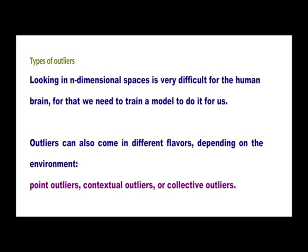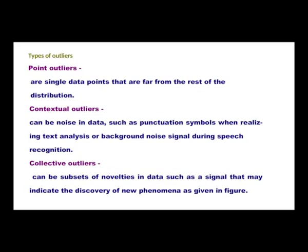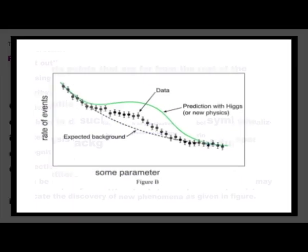Outliers can also come in different flavors depending on the environment. The classifications being point outliers, contextual outliers, or collective outliers. Point outliers are single data points that are far from the rest of the distribution, whereas contextual outliers can be noise in data such as punctuation symbols when realizing text analysis or background noise signals during speech recognition. Collective outliers can be subsets of novelties in data such as a signal that may indicate the discovery of new phenomena.